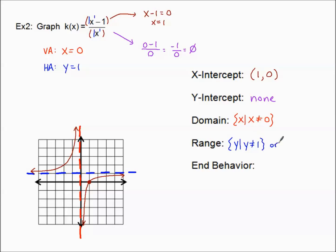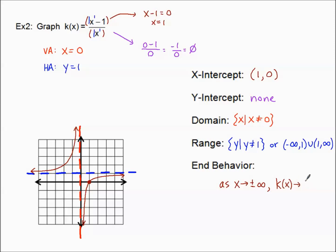In interval notation, the range goes from negative infinity to one, union with one to infinity. Sometimes with range, interval notation makes more sense. Finally, end behavior: both ends approach the value of the horizontal asymptote. k(x) is approaching the value of one.